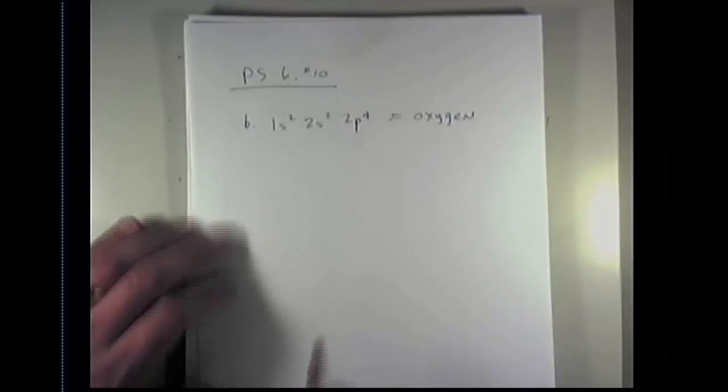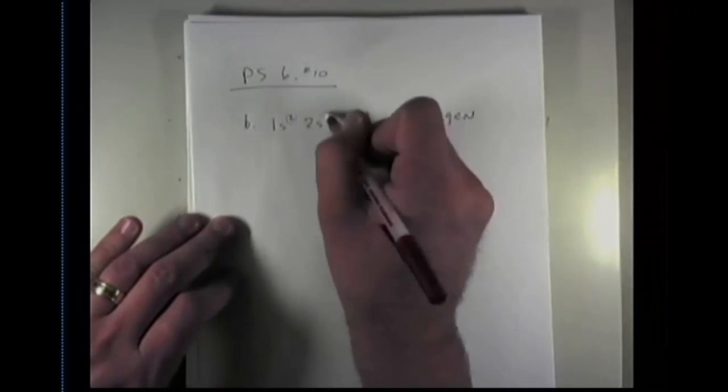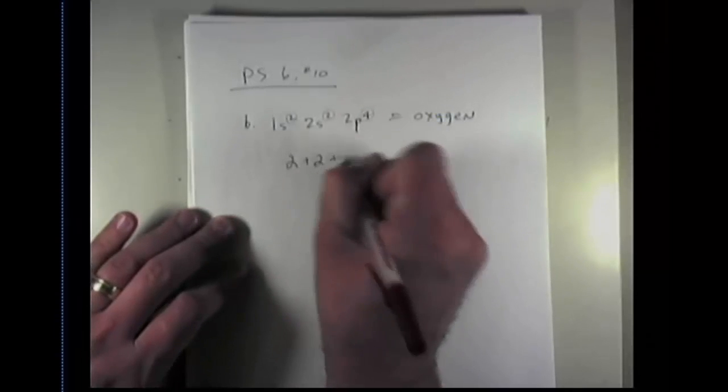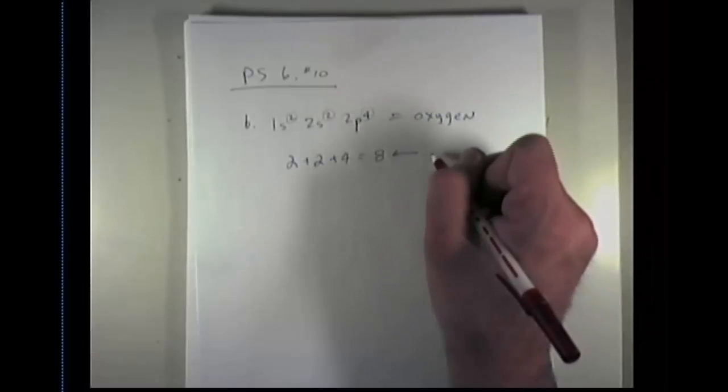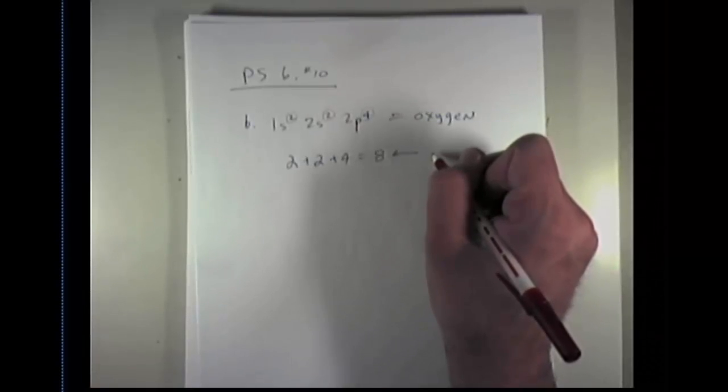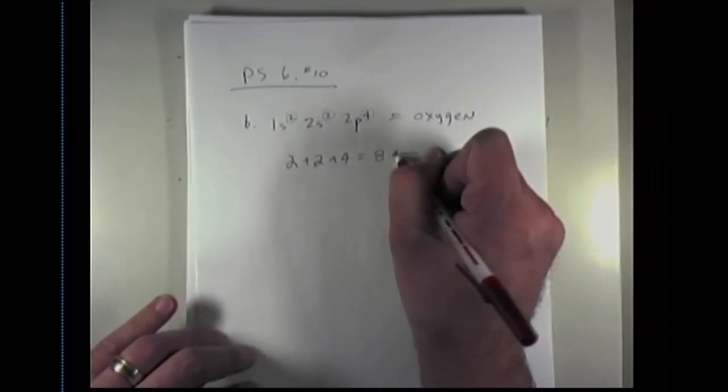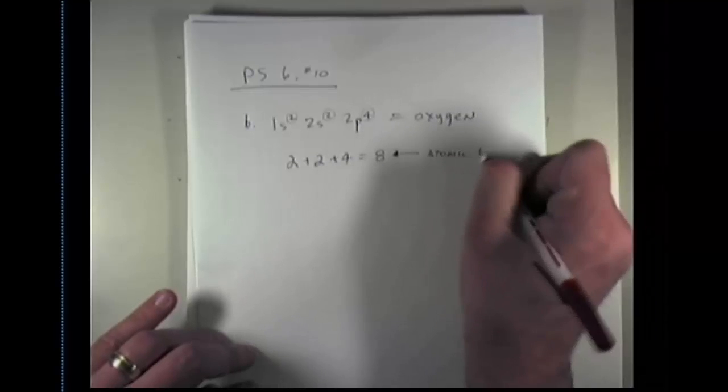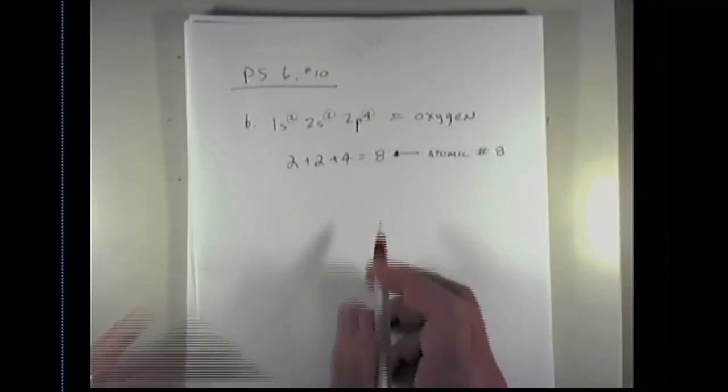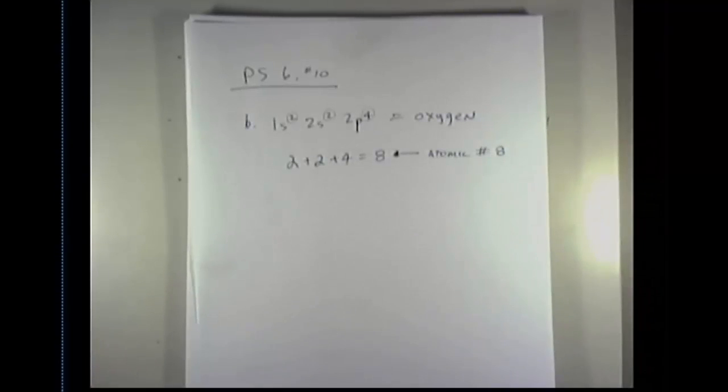A really easy way to do this is to remember that these superscripts represent electrons. So if I add those up, 2 plus 2 plus 4 equals 8, that is the number corresponding to the element on the periodic table. So this is atomic number 8, which is the atomic number of oxygen. So that answers the first part of the question.